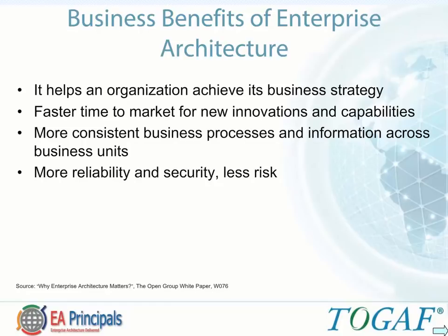If IT can introduce new technologies and functions quicker, then the organization can respond faster to competitive pressures. This means technology is ready when needed, transitions are smoother, and unnecessary change is kept to a minimum. Enterprise architecture also provides for more consistent business processes and information across business units. Enterprise architecture can unlock the power of information, unifying silos that inhibited business processes. It identifies the processes, applications, and data that need to be consistent if consistent decisions are to be made.